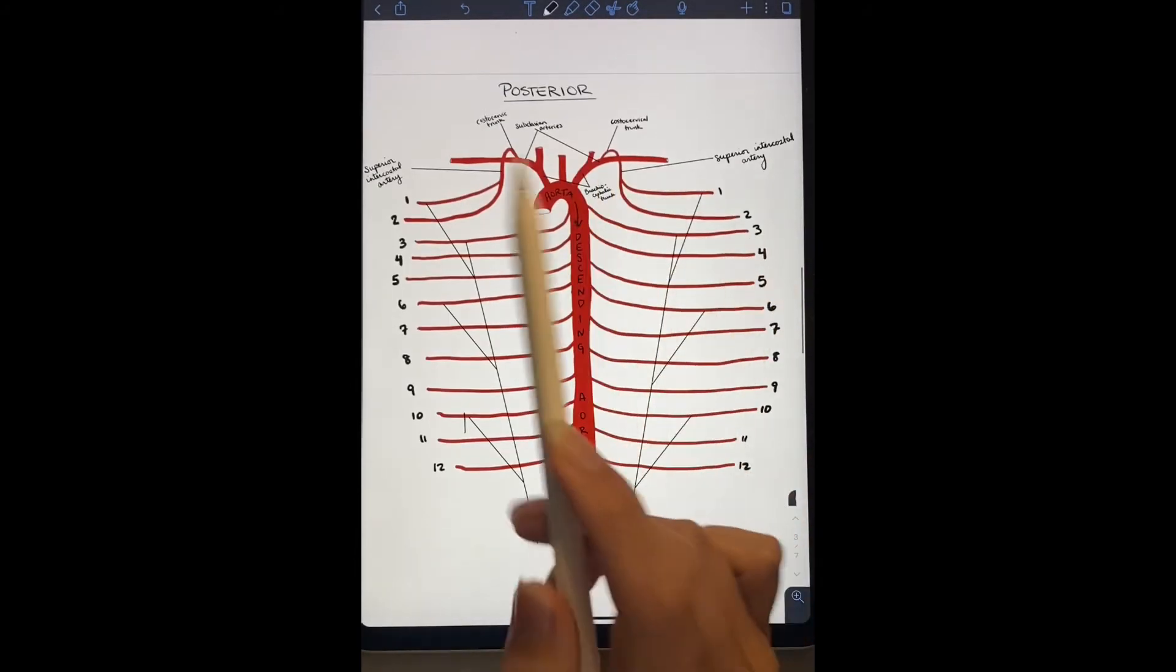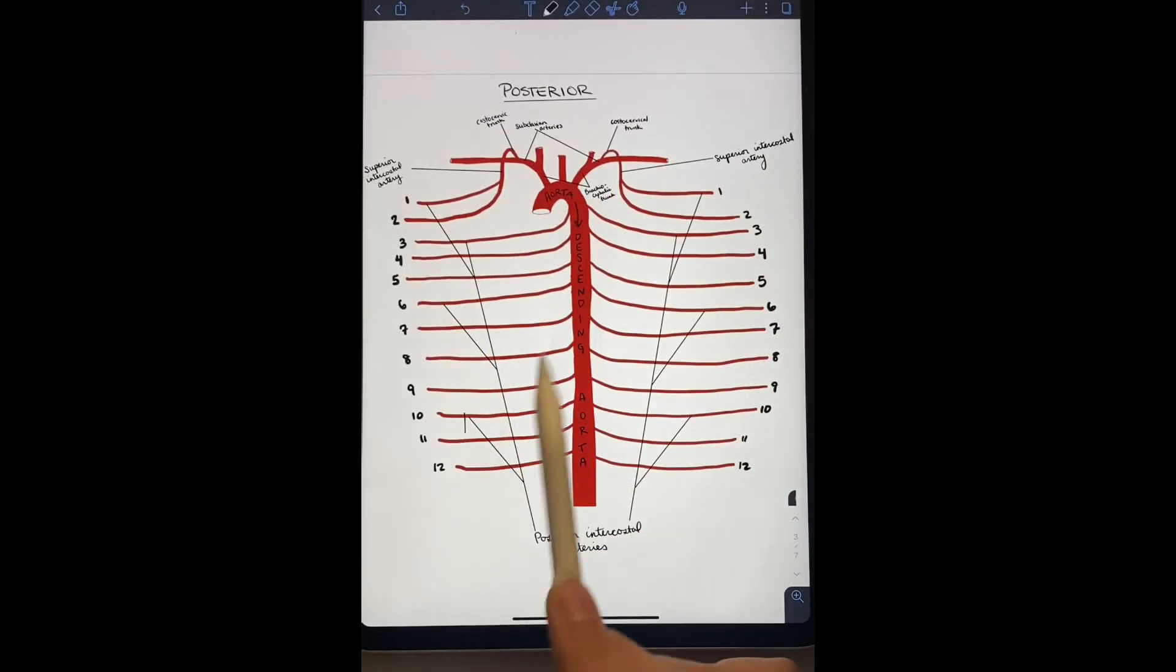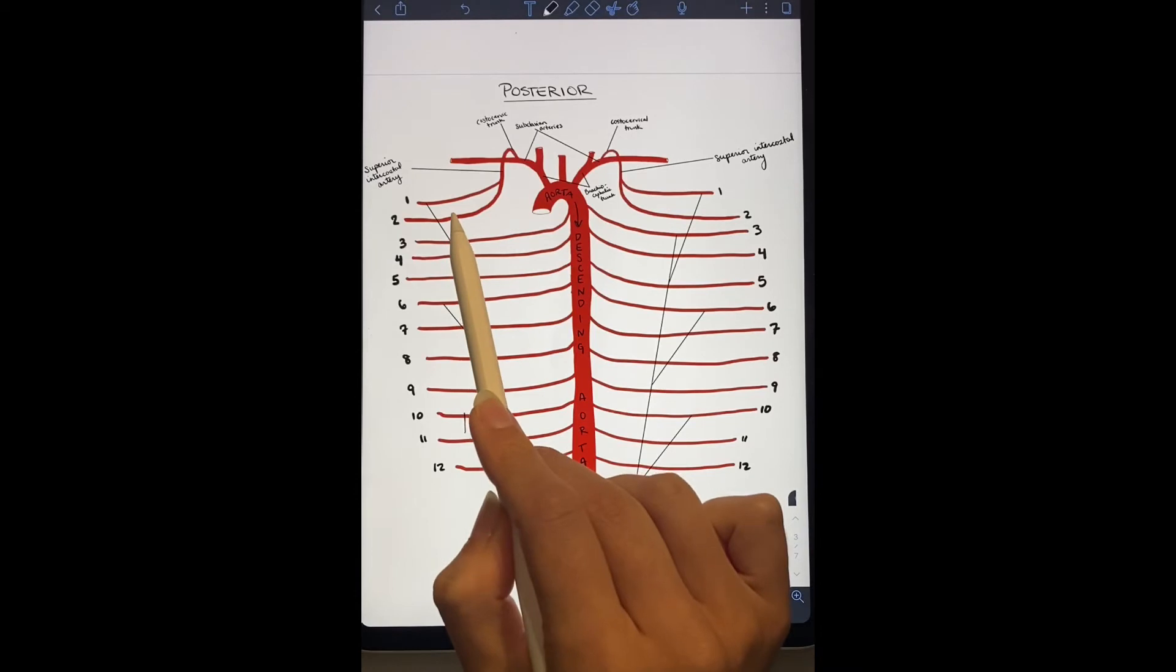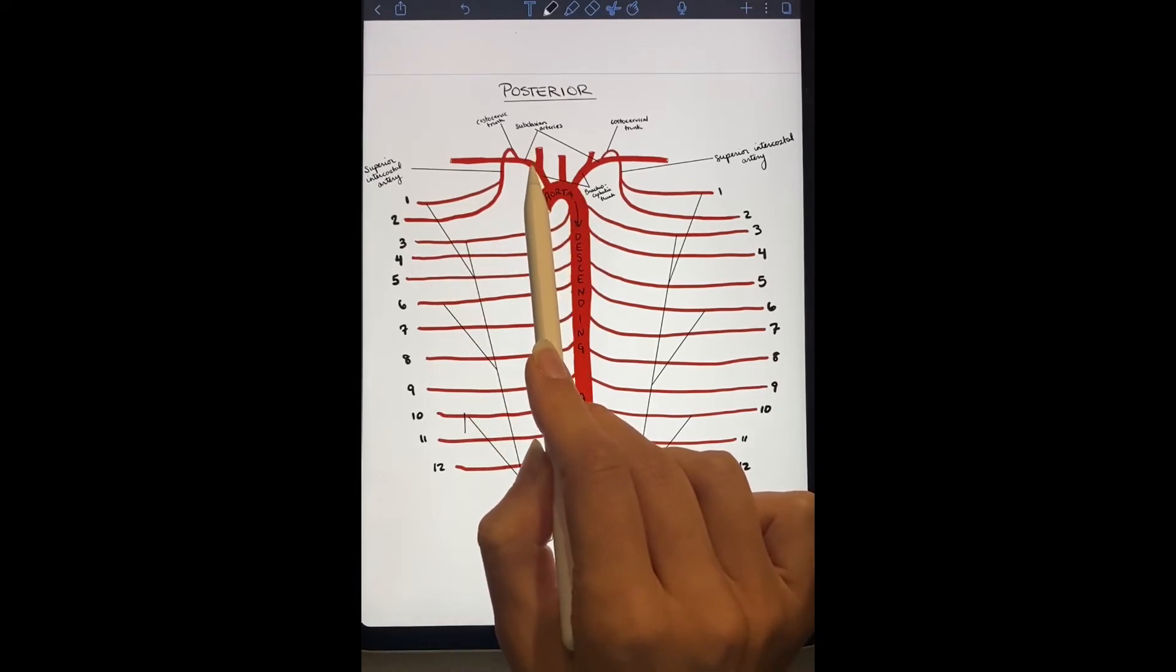Posterior intercostal arteries three through twelve branch directly off the descending aorta. Posterior intercostal arteries one and two travel from the aortic arch to the brachiocephalic trunk to the subclavian artery and branch off the costocervical trunk.